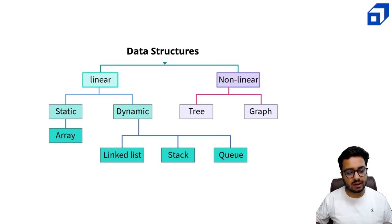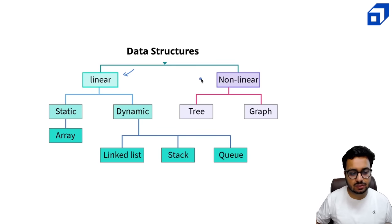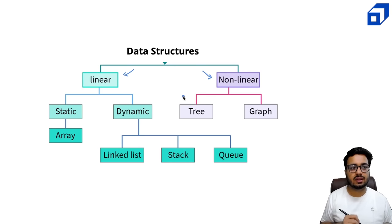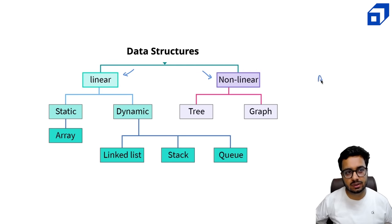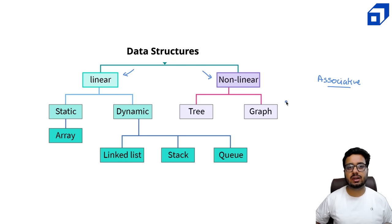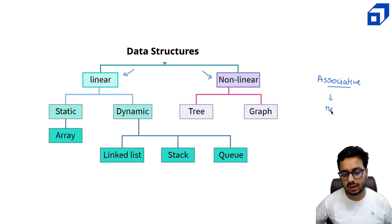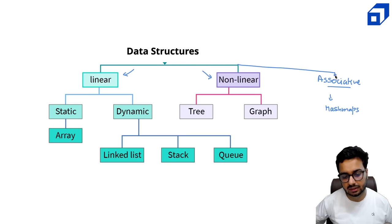Broadly speaking, data structures are divided into two categories: linear data structures and non-linear data structures. There is one more category — associative data structures — in which we store data in the form of key-value pairs. For example, hash maps. We will talk about hash maps later in this course.